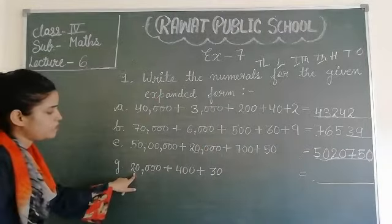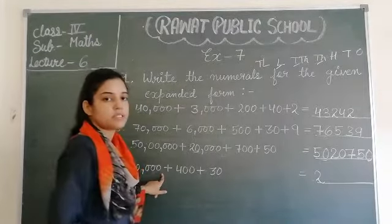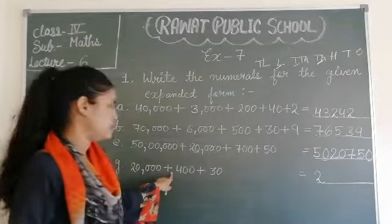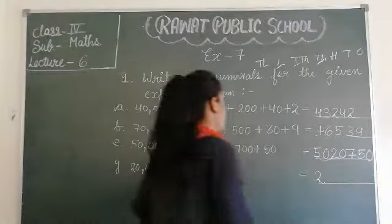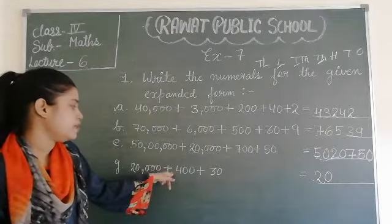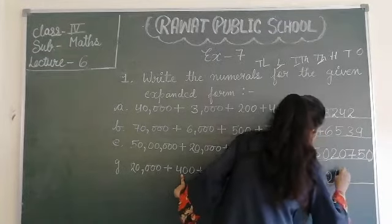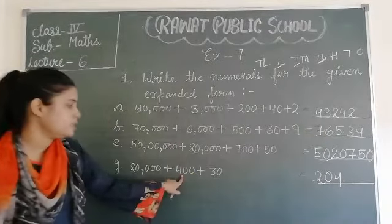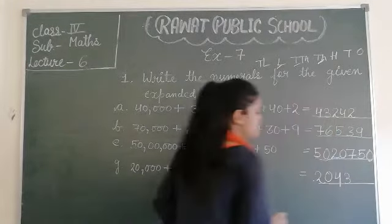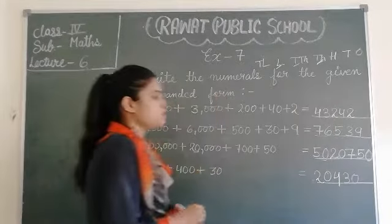Next, twenty thousand. Twenty thousand ka hum likhenge two. Twenty thousand se before kaun si place value aati hai? One thousand wali. One thousand wali hai ya nahi hai? Nahi hai, toh uske liye hum agar koi nahi hoga number toh zero ka use karenge. Phir uske before, one thousand se before, hundred wali. Toh hundred wali hai, uska hum four likh denge. Phir uske baad, hundred se before aati hai ten wali. Toh ten wali hai, ones wali nahi hai, toh uske liye hum zero ka use karenge. Toh twenty thousand four hundred thirty.